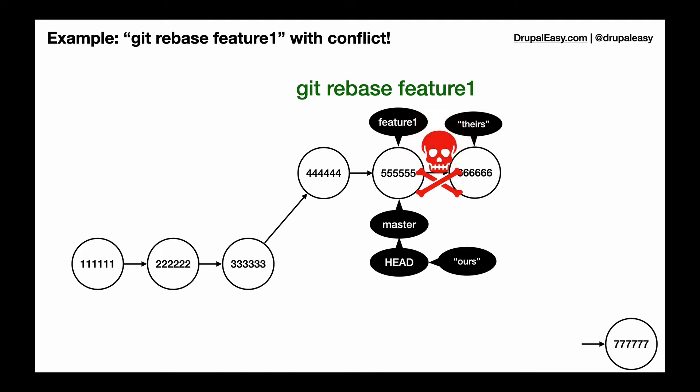Why do we end up with a conflict? Well, because 555 has a change to the composer.lock file and 666 has a change to the composer.lock file. In each case, the content hash has been modified by either the addition or deletion of a project dependency, and git cannot figure out which one to use.